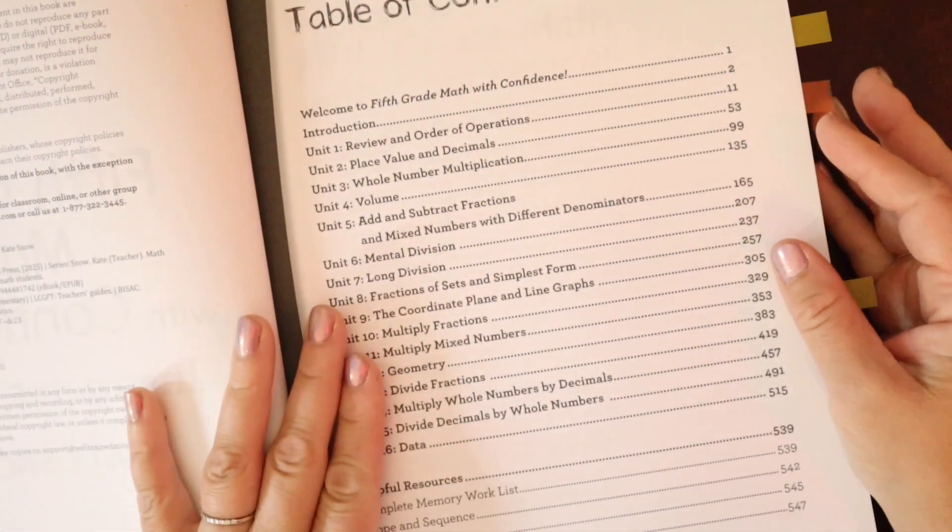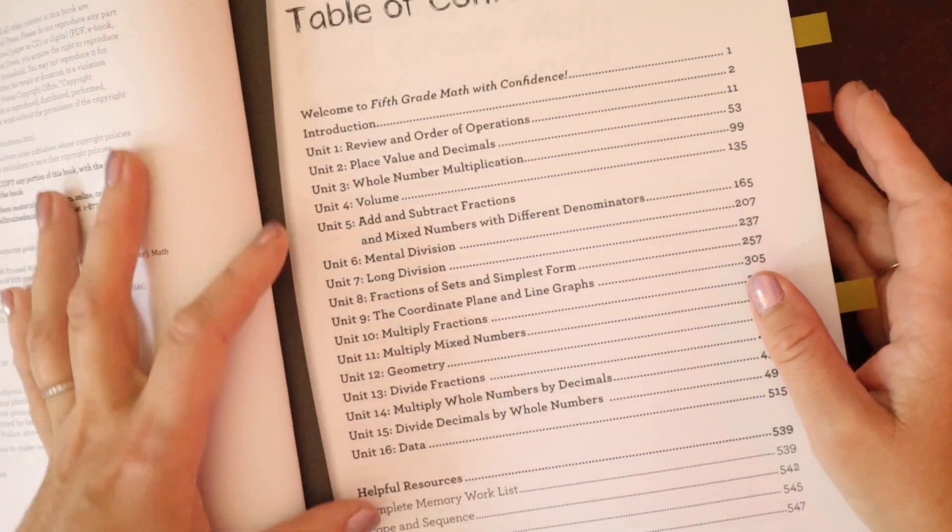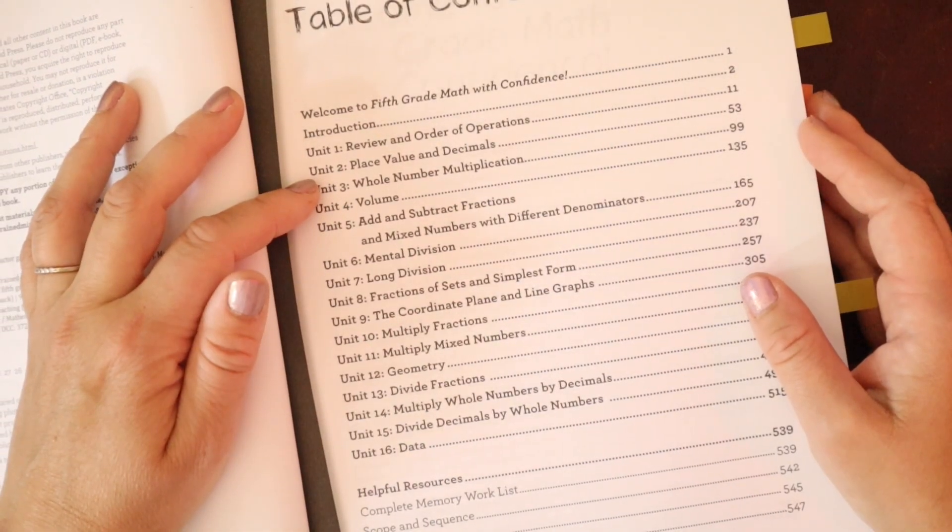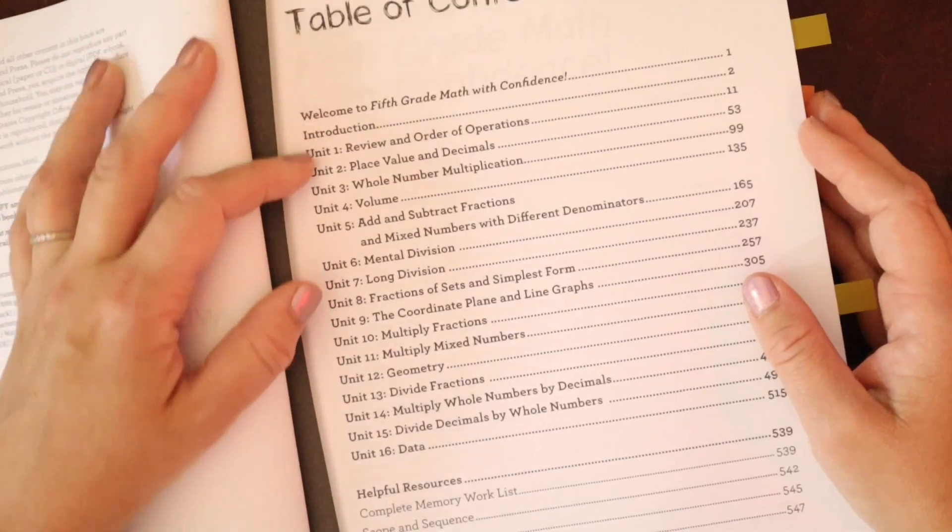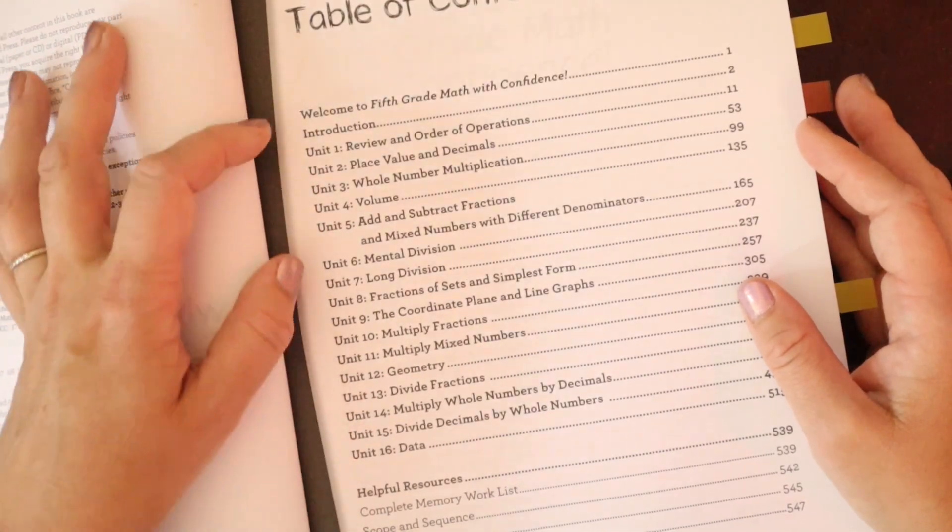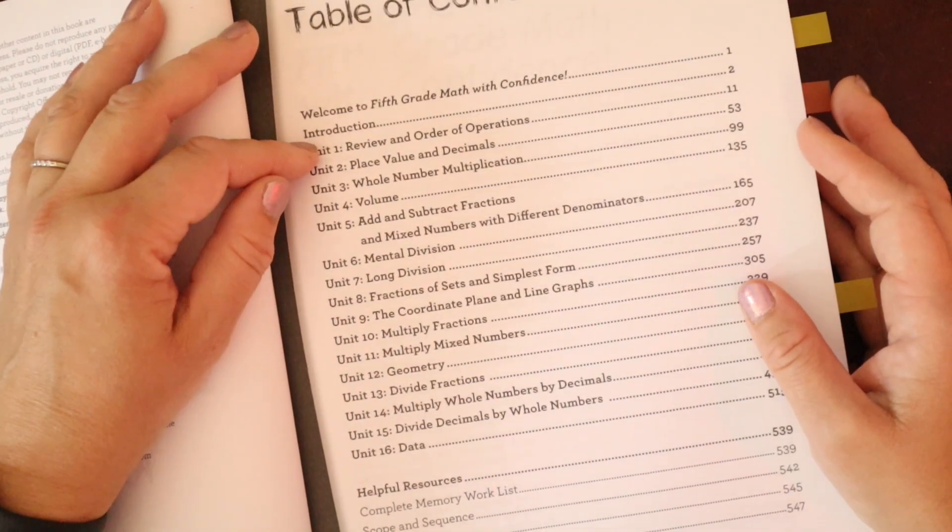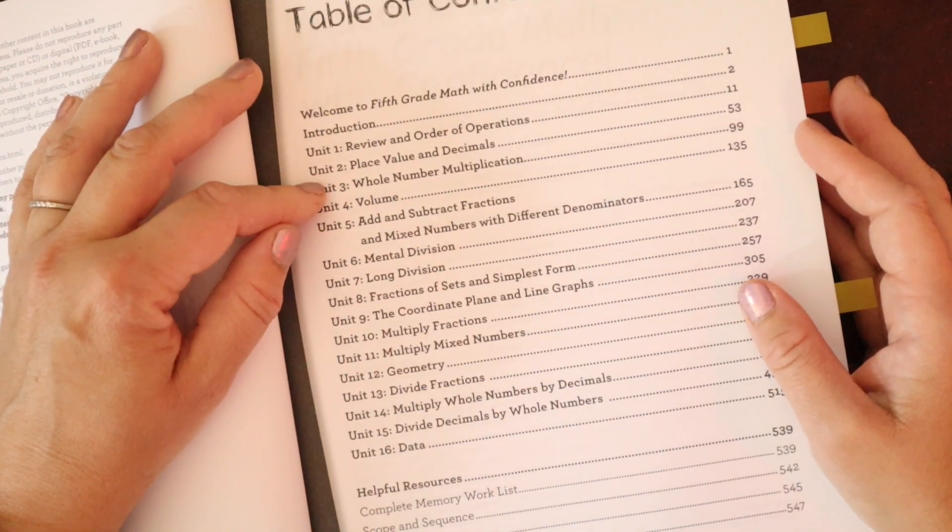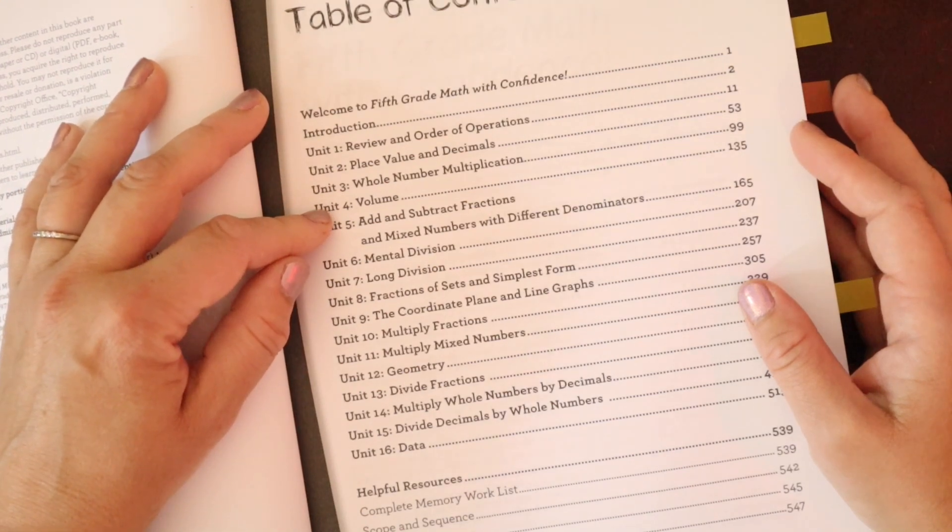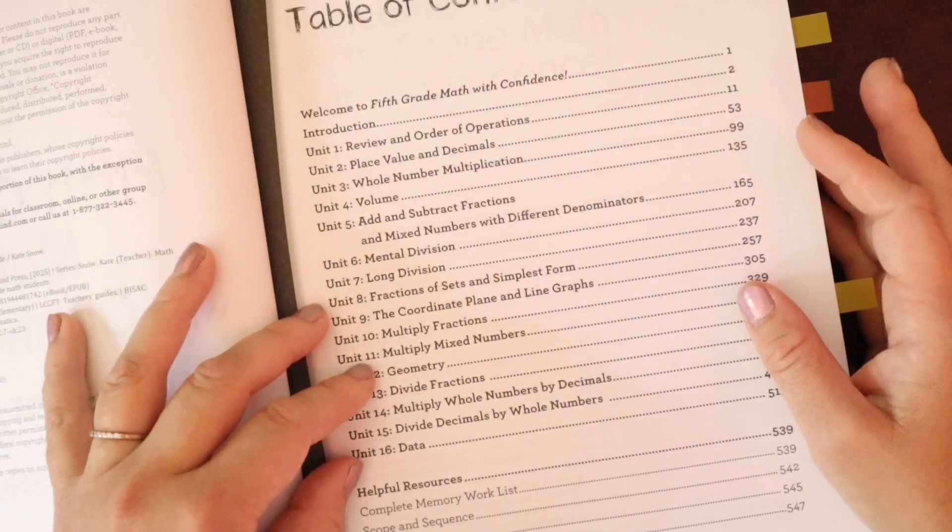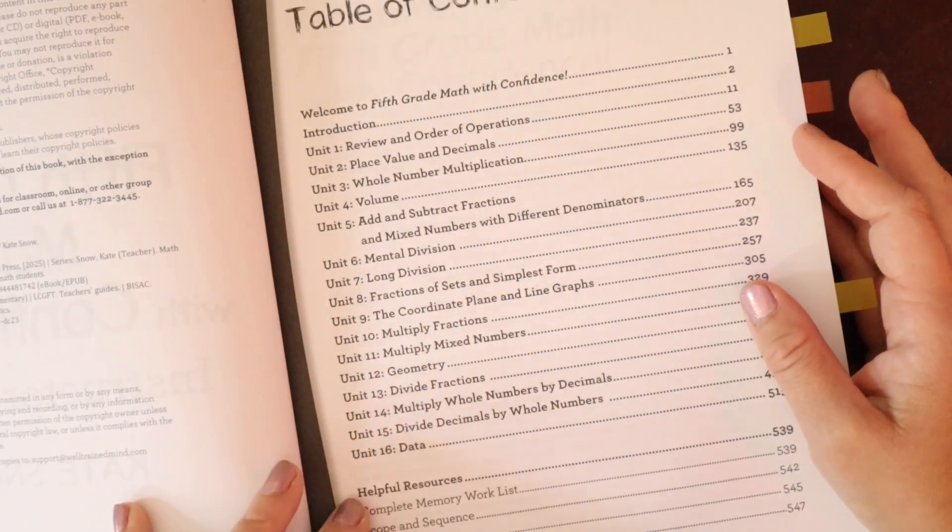So we start with our table of contents. The different units are in here, we have 16 units, just like in the previous grade. Our units are not divided by week, they are just divided by how many lessons it takes to cover that unit material. So each unit has kind of a different number of lessons. So we're moving through order of operations, place value, with decimals, whole number multiplication, volume, fraction work, more division work, geometry, more fraction and division work, data, the welcome to Math with Confidence note.